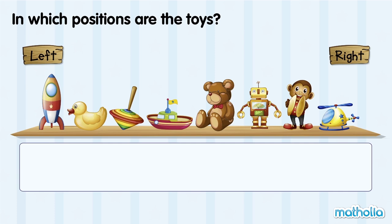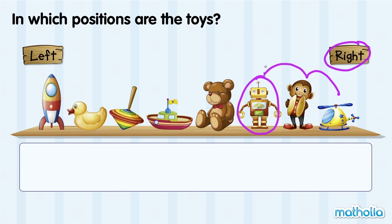From the right, in which position is the robot? The robot is here. From the right, the robot is first, second, third. The robot is third from the right.